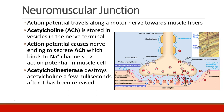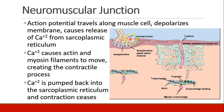What happens in the muscle cell after the action potential begins? The action potential travels along the muscle cell and eventually depolarizes the membrane, causing release of calcium from a structure known as the sarcoplasmic reticulum. When the calcium is released, it goes towards actin and myosin filaments and causes them to move, and this is what actually creates the contractile process — a process that we're not really going to discuss in much detail.